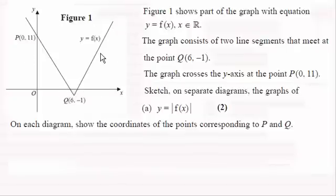So how do we do it? Well you should be familiar with the fact that when you put a mod sign round the outside of some function it just means any negative y values become positive and the negative y values are these parts below the x-axis.